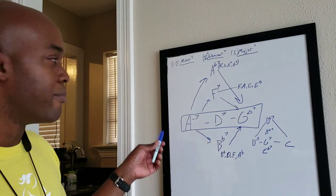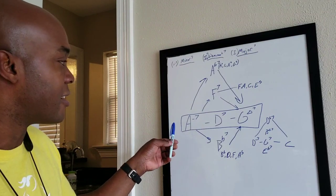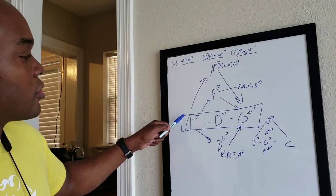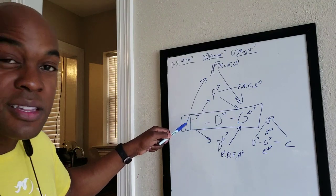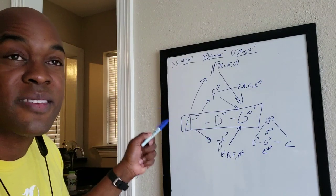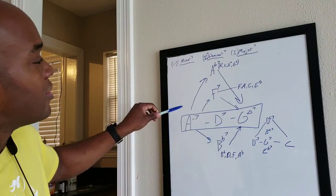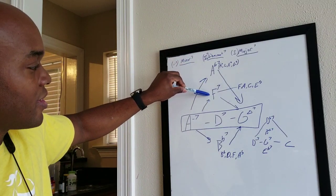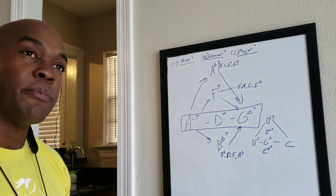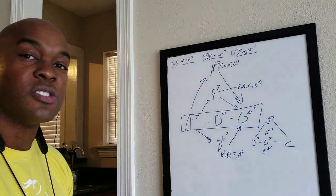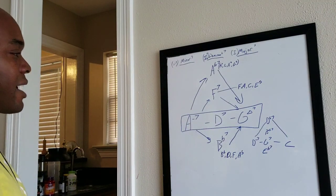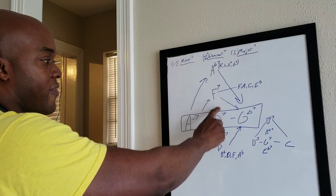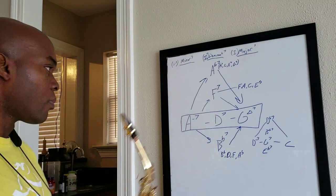I'm going to play over this two-five-one in the key of G with my backing track. I'll keep it simple — just one, three, five, seven, maybe a nine thrown in. First I'll play the original two-five-one, then the tritone substitution (the chromatic movement), then the F7 substitution, then the B-flat substitution, so you can hear each one for yourself and decide which ones you like.